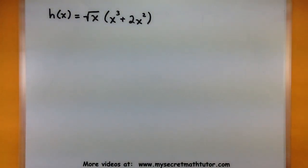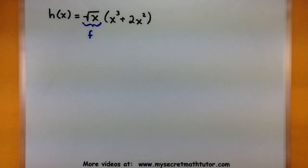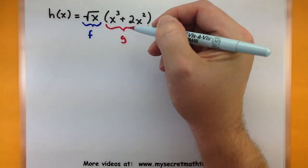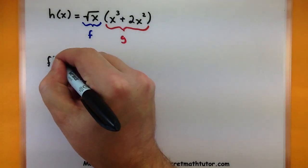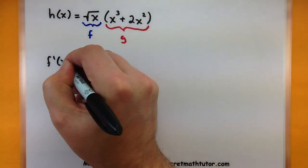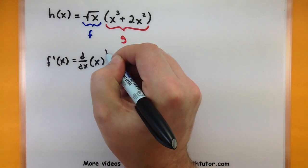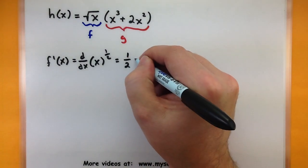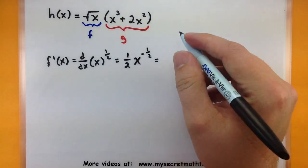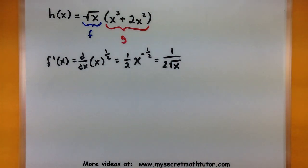In this example we want to figure out the derivative of the square root of x multiplied by x cubed plus 2x squared. Let's highlight the two functions being multiplied. Here's f — the square root of x — and all of this other part would be g. We need to find the derivative of each separately. For f, we think of it as x to the 1 half, and using the power rule, we bring down the 1 half and get x to the negative 1 half. We can write this as 1 over 2 times the square root of x. That is the derivative of f.